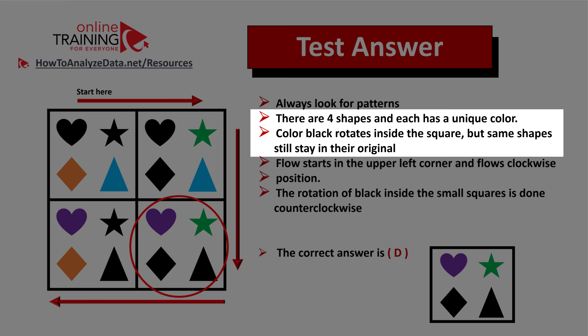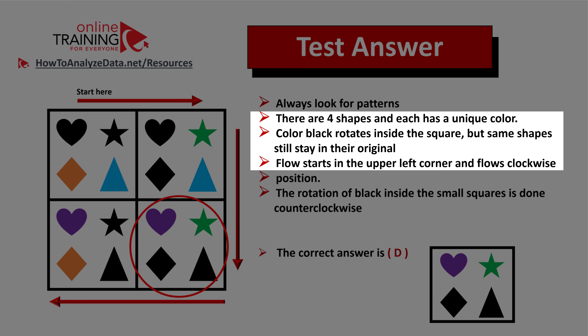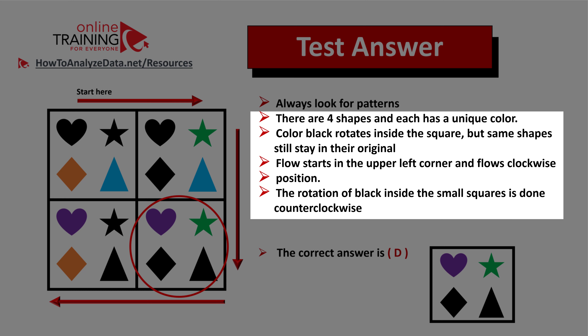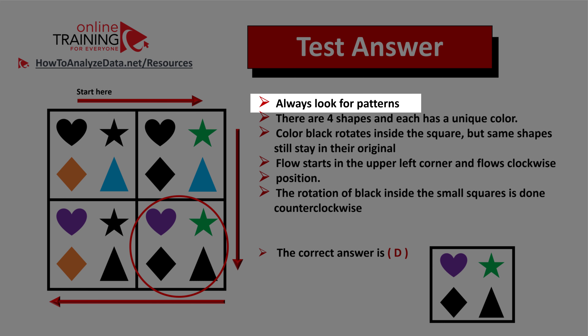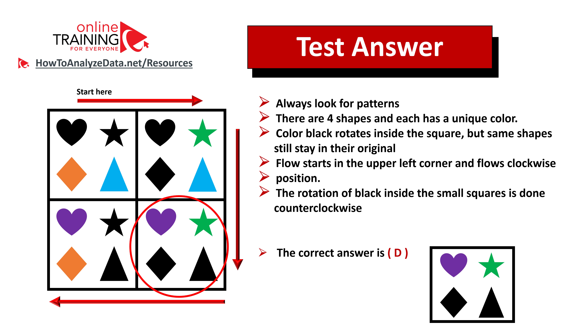The flow among the shapes starts in the upper left corner and goes clockwise, but the rotation of the black color inside the squares goes counterclockwise — that's the tricky part of the question. The right answer here is choice D. Let's recap: always look for patterns. In this case, there are four shapes and each shape has a unique color. Color black rotates inside the square, but the same shapes stay in their original position. The rotation inside the squares is done counterclockwise. Hopefully you've nailed this question and now know how to answer similar problems on the test.